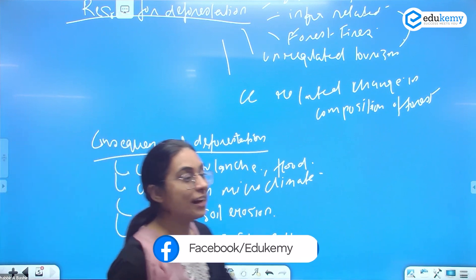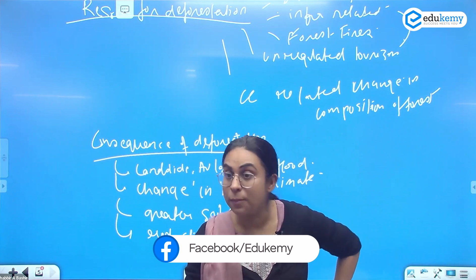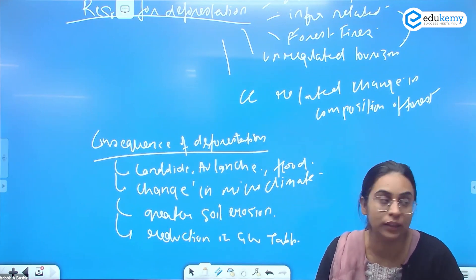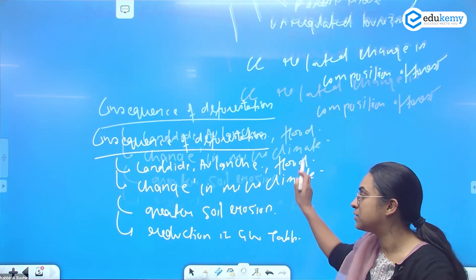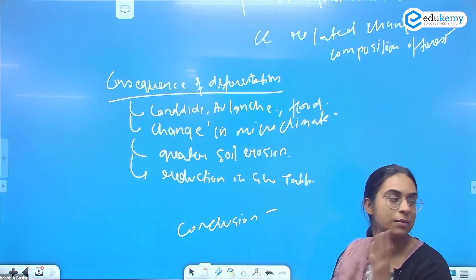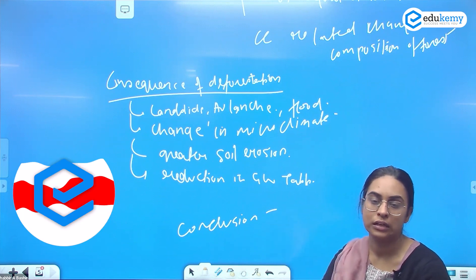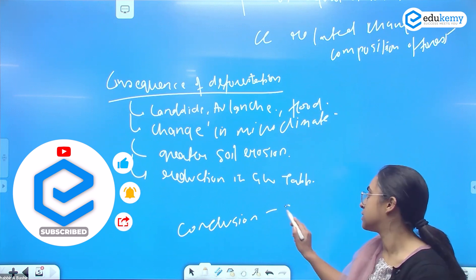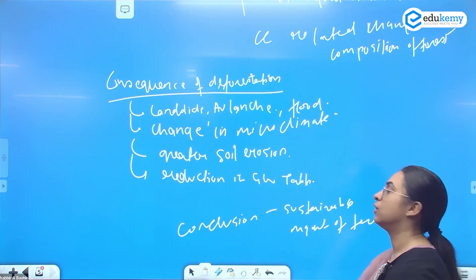When writing in detail about the montane forest, cover: what it is, how it is different, what species variation exists, and what can be the conclusion about sustainable management. How do you manage the forest? You can write about agroforestry, social forestry, family forestry, eco-sensitive zones, and the Madhav Gadgil committee recommendations — sustainable management of the forest.